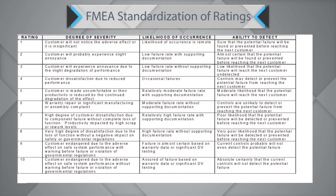This is a sample FMEA rating chart. If I am calling something a severity 1, I essentially mean that the customer will not notice the adverse effect, or the degree of severity associated with that failure is insignificant. While a severity 10 is when the customer is endangered due to an adverse effect on safe system performance without warning before failure, or a violation of government regulation.